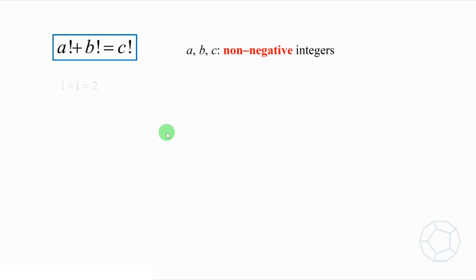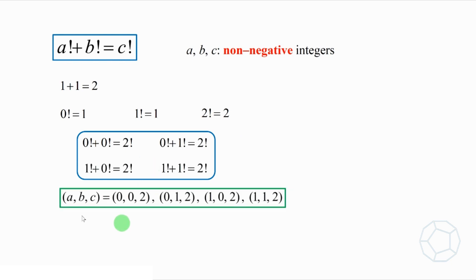Let's try some small values. Everyone knows that 1 plus 1 equals 2. We can replace 1 by 0 factorial and 1 factorial, and replace 2 by 2 factorial. Then we get the following 4 possible cases. So there are 4 sets of answers already.